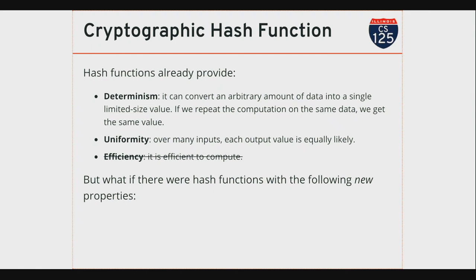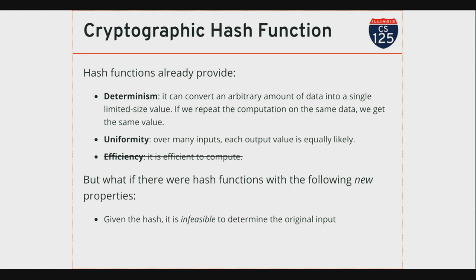When we talk about hash functions in computer security or cryptography, we eliminate the efficiency requirement. We don't want a cryptographic hash function to be efficient — we want it to be difficult to compute. If you give someone the output of a hash function, it should be infeasible to reproduce the input. This is sometimes referred to as a one-way function: if I give you the results, you can't invert it and figure out the input. This is really important for use in computer security.